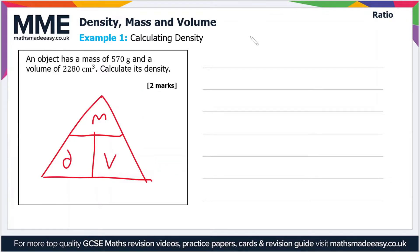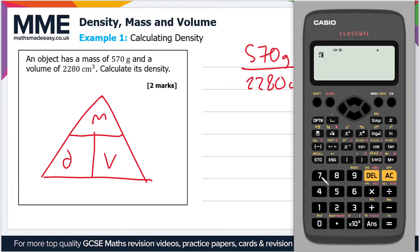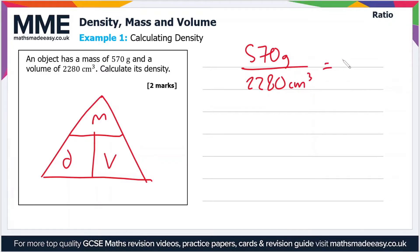We want to divide the mass by the volume, so 570 grams divided by 2280 centimeters cubed. Let's put that in the calculator: 570 divided by 2280. That's 0.25.